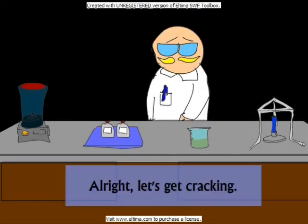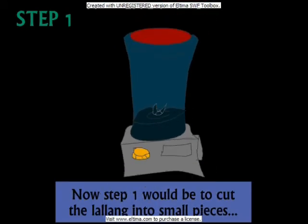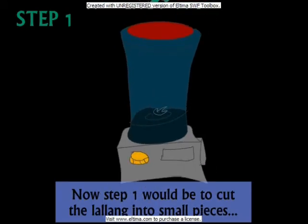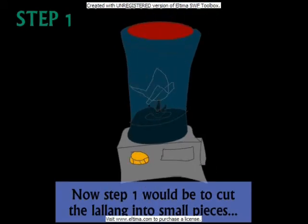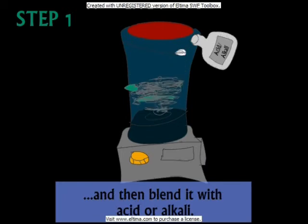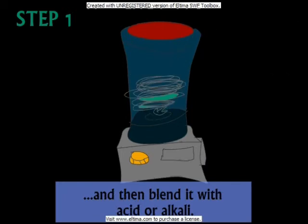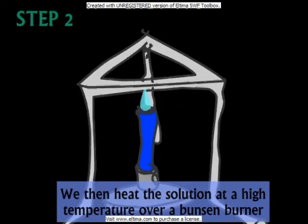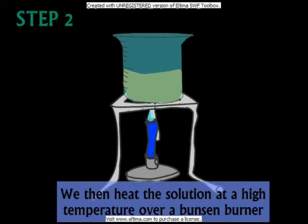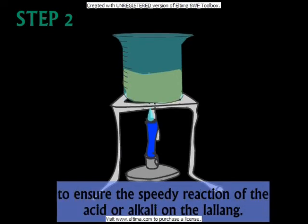All right, let's get cracking. The first step would be to cut the lala into small pieces and then blend it with acid or alkali. We then heat the solution at a high temperature over a Bunsen burner to ensure the speedy reaction of the acid or alkali on the lala.